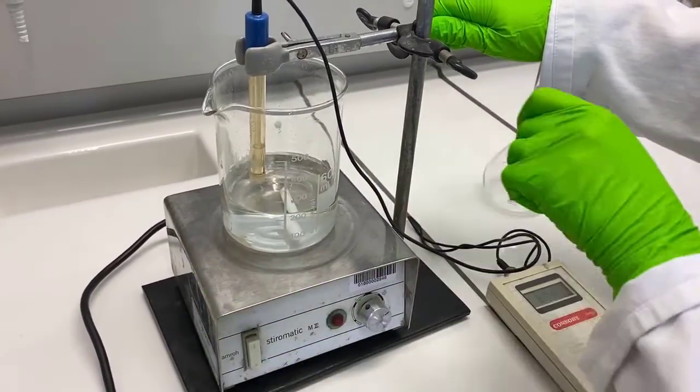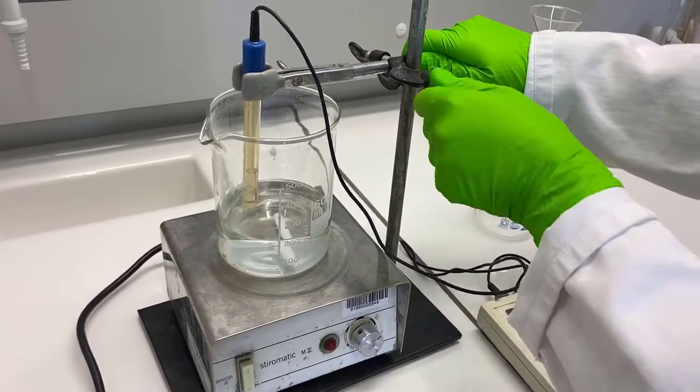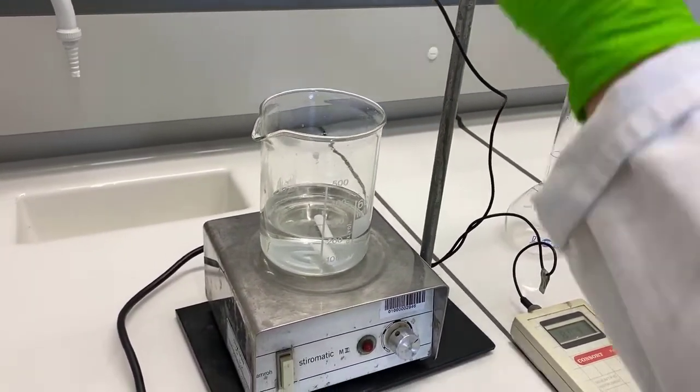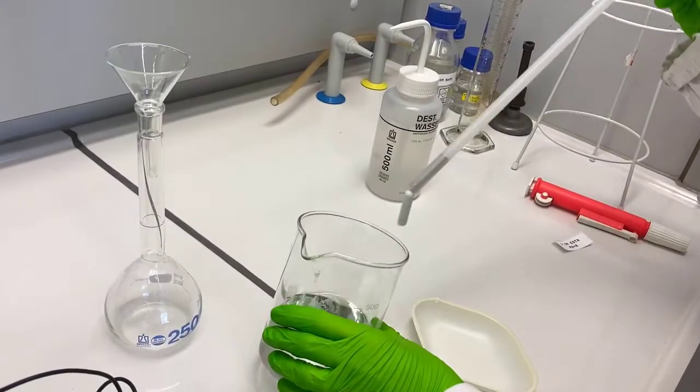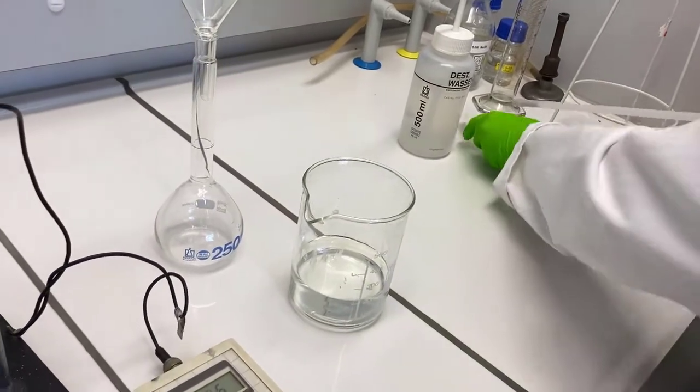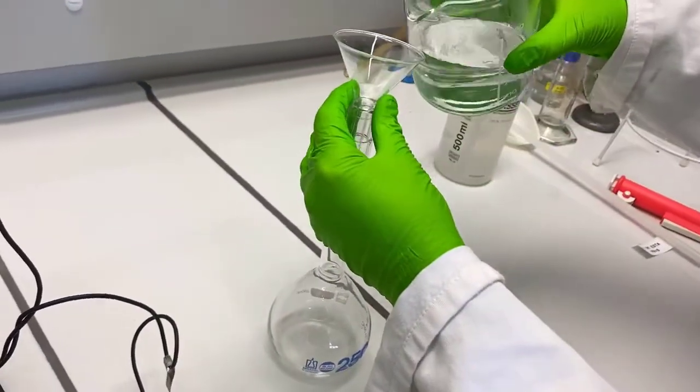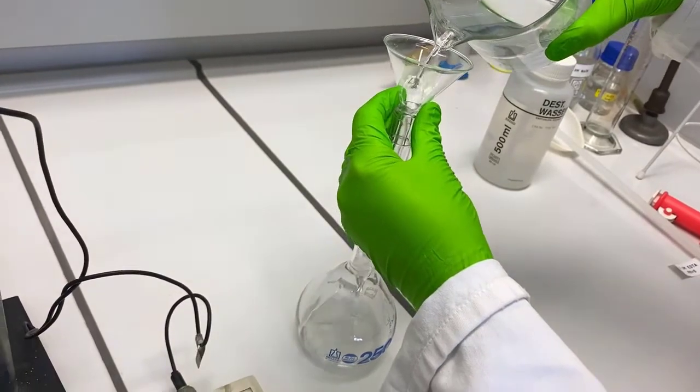Now once the required pH is achieved and all EDTA powder completely dissolved, the preparation of 0.5 molar EDTA of pH 8 will be completed by adding up to 250 ml marking of your volumetric flask using the pH neutral distilled water.